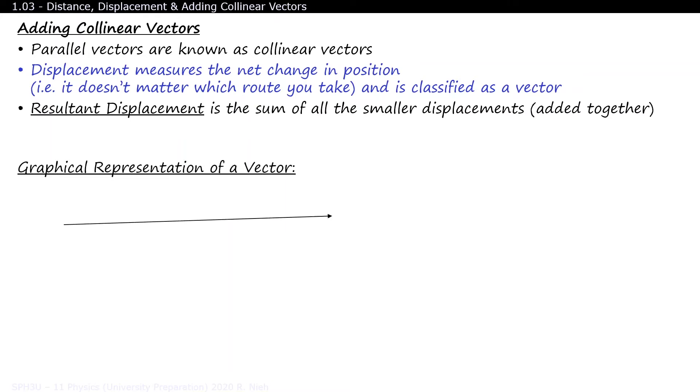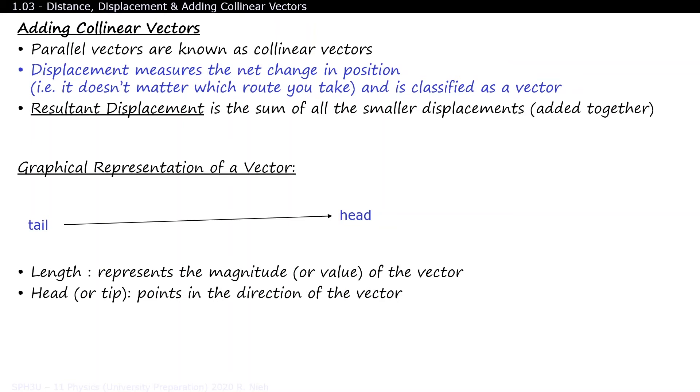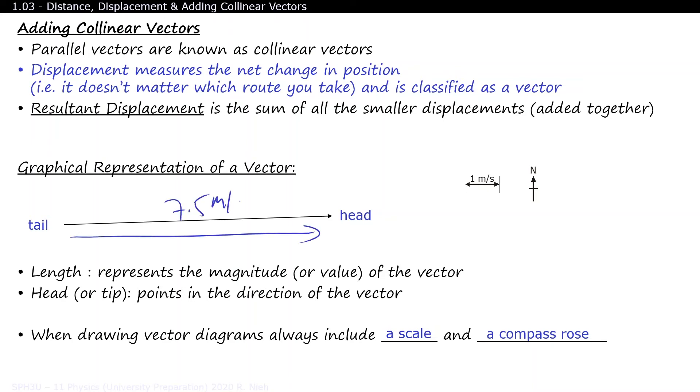Vectors can be drawn on a sheet of paper as an arrow. The pointy end of the arrow is known as the head, and the opposite end is known as the tail. Depending on how long or how short this arrow is, it describes the magnitude of the vector. All vectors must have an arrowhead, as it is used to describe the direction of the vector. Now when you draw a vector inside a scale diagram, you must always include a scale and a compass rose. You might notice this scale is measured in meters per second. That means this vector is describing a velocity at a rate of 7.5 meters per second.